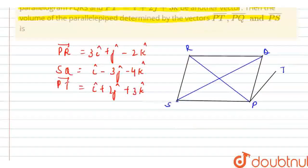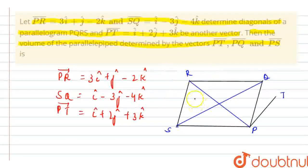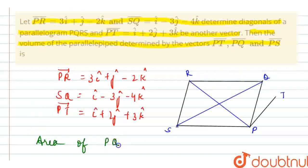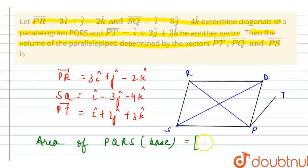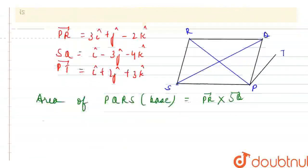Firstly, what we can do is find the area of this parallelogram PQRS, which will basically be the base for the parallelepiped. So I am writing down: area of PQRS, which would be the base for the parallelepiped. We are given the diagonals PR and SQ, so the area would be the cross product of these two vectors — the cross product of PR vector cross SQ vector.